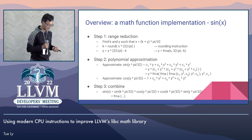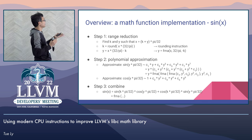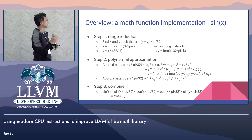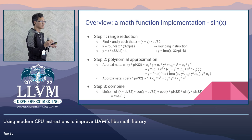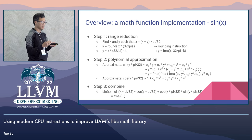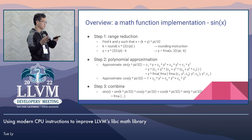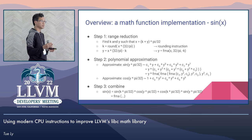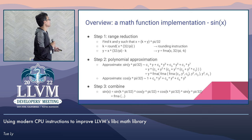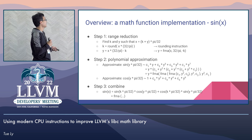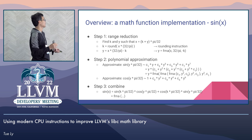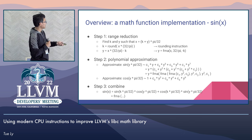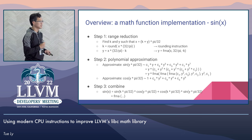The overview of the math implementation for transcendental functions — here I give the example of the sine function. The first step is range reduction, where a lot of times you have rounding happen. If you implement it naively, you convert floating-point values to integers and then convert them back, which kills the throughput. With rounding instructions you can avoid that. The later steps are polynomial approximations and then combining them. All of those have opportunities for FMA to join. I'll leave step three as an exercise for the audience.